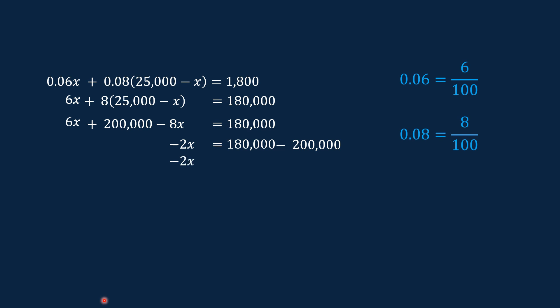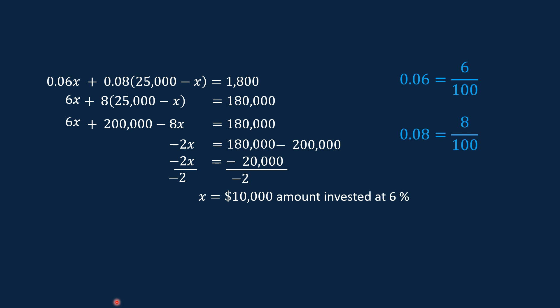So we have negative 2X is equal to negative 20,000. We divide both sides by negative 2. Negative 2X divided by negative 2 is equal to X, and negative 20,000 divided by negative 2 is equal to 10,000. So X is equal to 10,000.